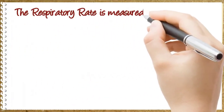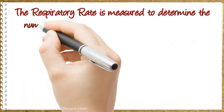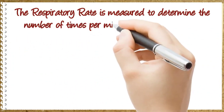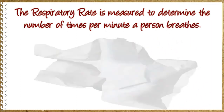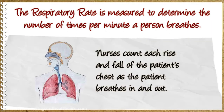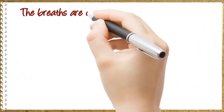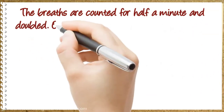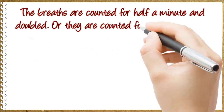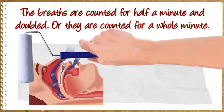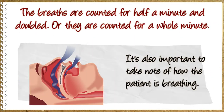The respiratory rate is measured to determine the number of times per minute a person breathes. Nurses count each rise and fall of the patient's chest as the patient breathes in and out. The breaths are counted for half a minute and doubled, or they are counted for a whole minute. It's also important to take note of how the patient is breathing.